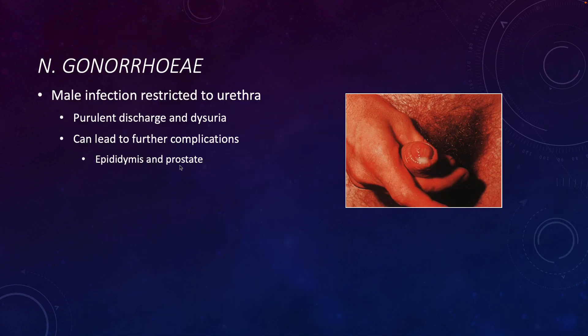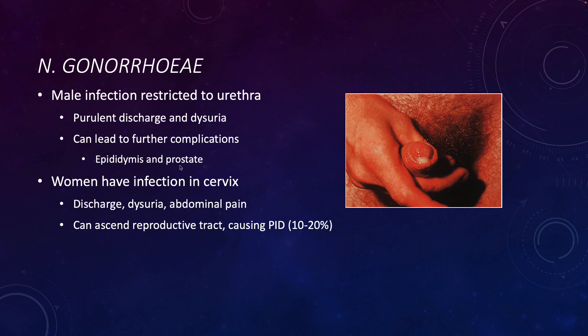In terms of symptoms, in men the infection is generally restricted to the urethra, with discharge and painful urination, which typically leads them to seek treatment. However, if untreated, it can lead to further complications including infection in the epididymis and prostate. Women tend to experience infection in the cervix, with discharge, painful urination, and abdominal pain. The infection can ascend the reproductive tract and bind to the fallopian tubes.